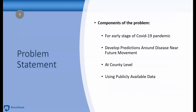Let's look at the problem statement carefully. There are four components to it. First is the early stage of COVID-19 pandemic. Second is to develop predictions around disease near-future movement. Third is that this prediction should be at a county level. And fourth, what kind of data do we want to utilize? It's publicly available data.